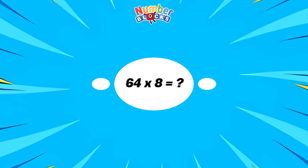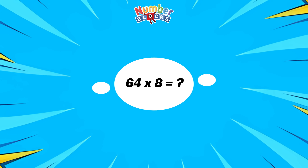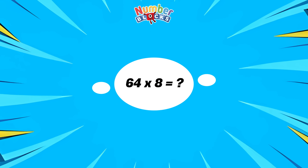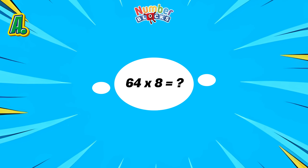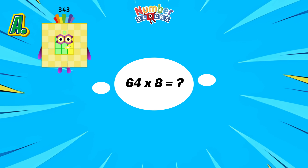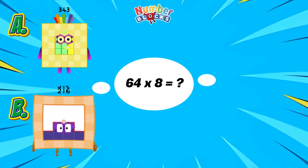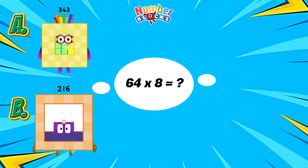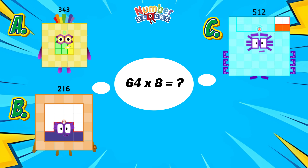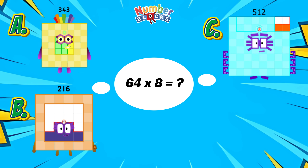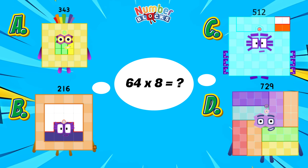And lastly, 64 multiplied by 8 is equals to... A, 343. B, 216. C, 512. Or letter D, 729.